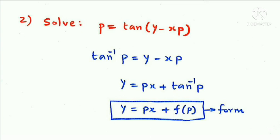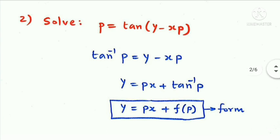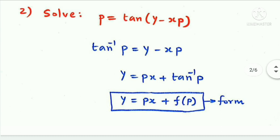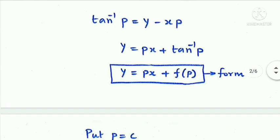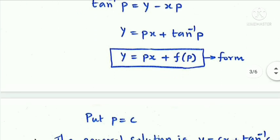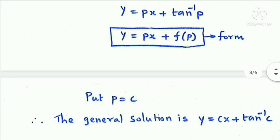This is in Clairant's form, y = px + f(p). Putting p equal to c, the general solution is y = cx + tan⁻¹c.